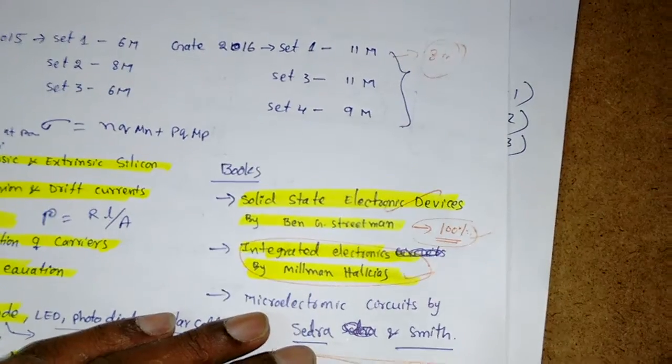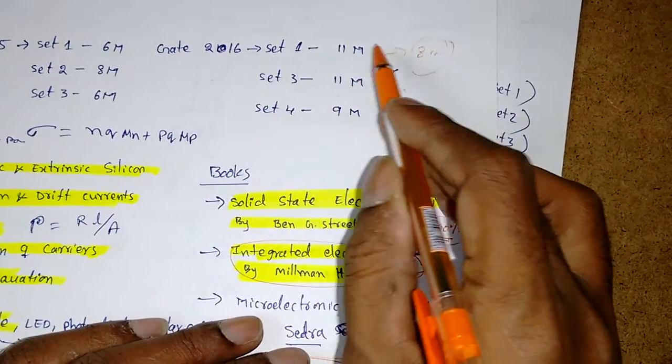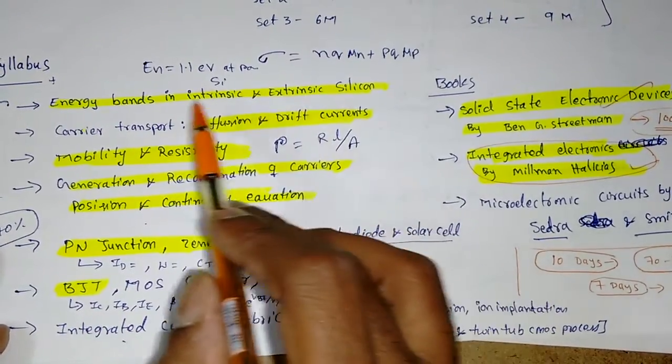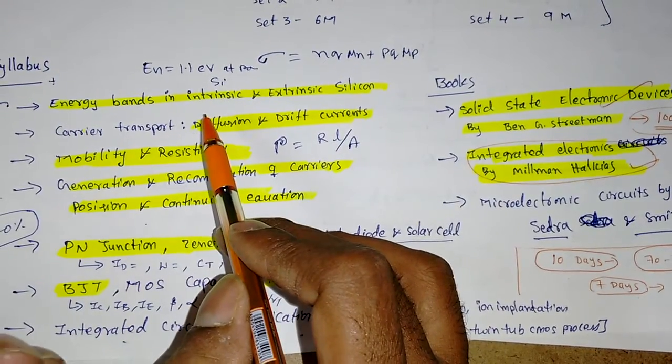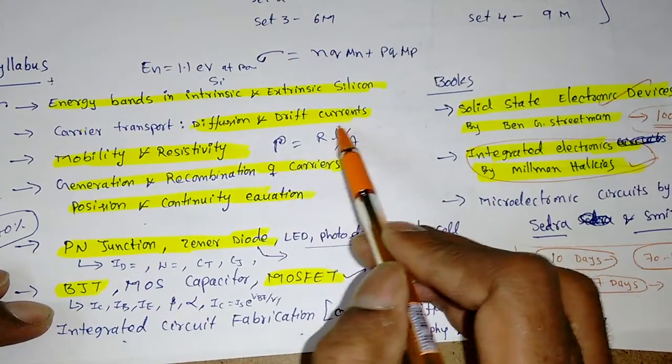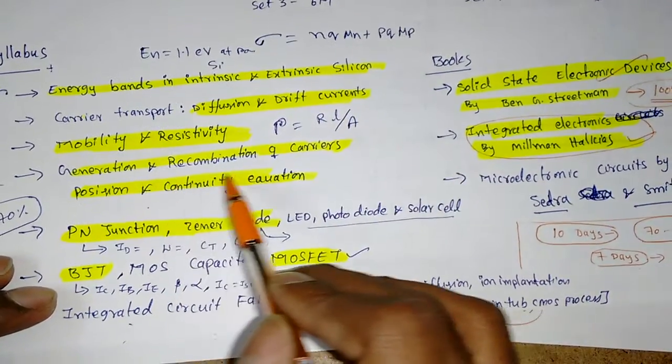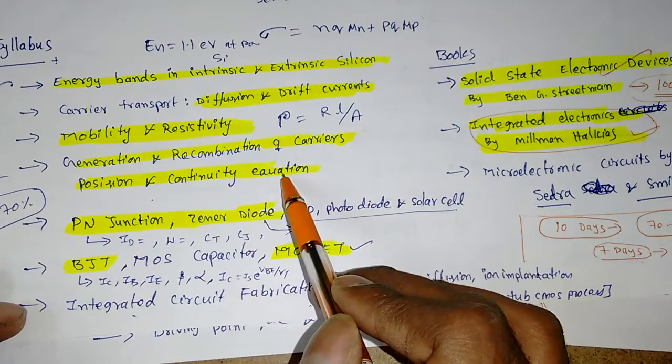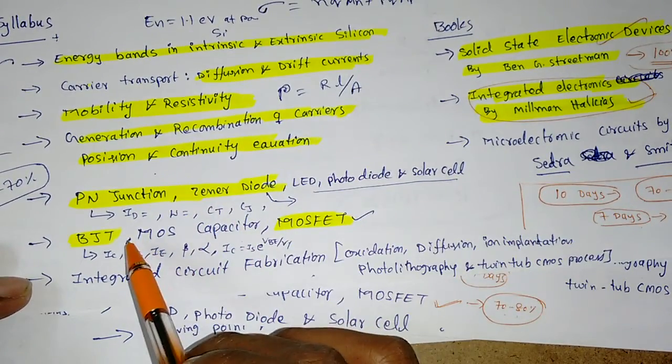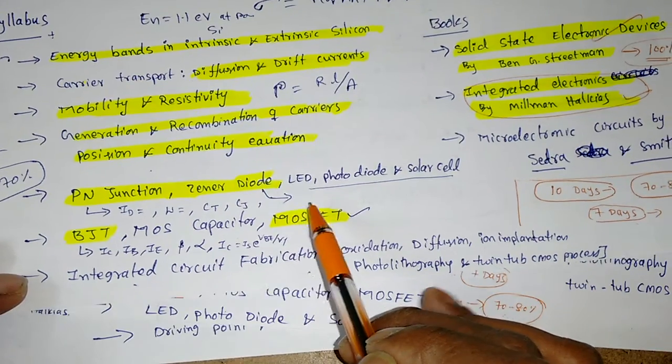If our preparation is very good, we will get 100%. My strategy is we will start with bands - semiconductor types, then what is thermal voltage, diffusion drift currents, energy bands, generation and recombination, some equations, conductivities, then PN junction diode, BJT, and MOSFET.